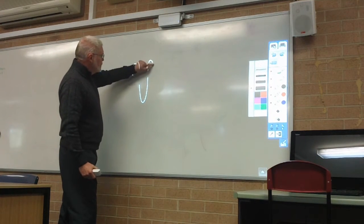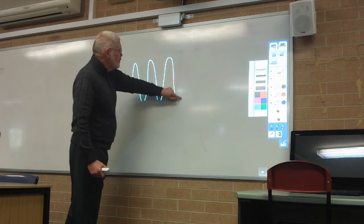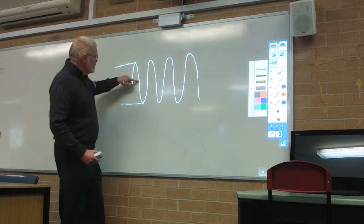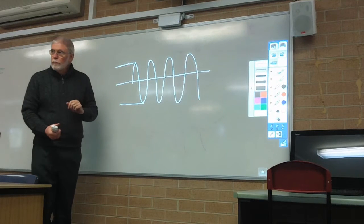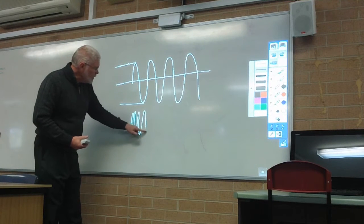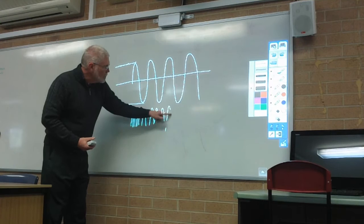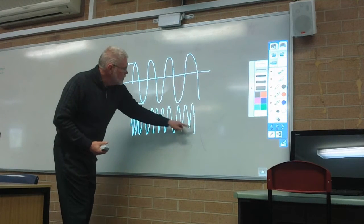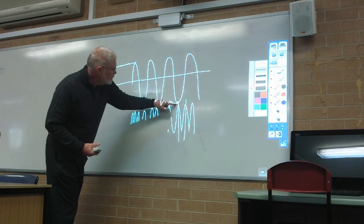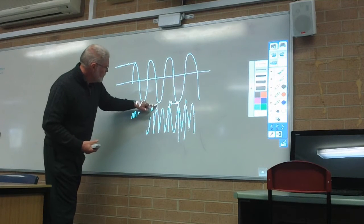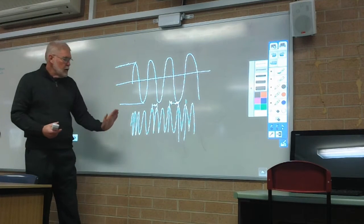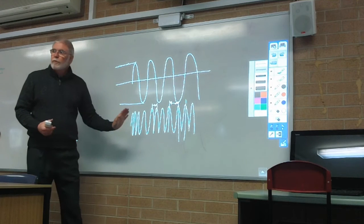Waves are defined in two different ways. One is the size that the wave is generating — that's amplitude. The other is related to how often the waves occur, meaning the distance between each wave. That's the relative occurrence of the peaks and troughs over a time period, which is referred to as frequency.